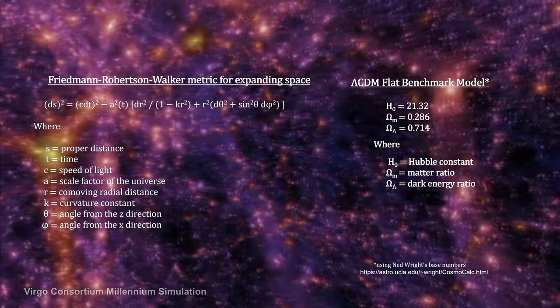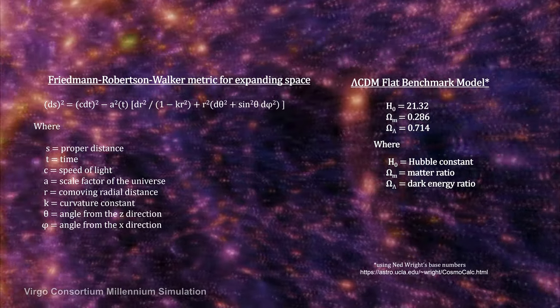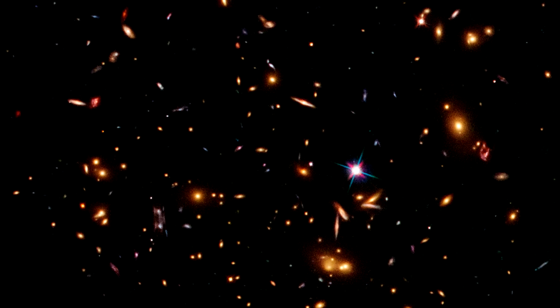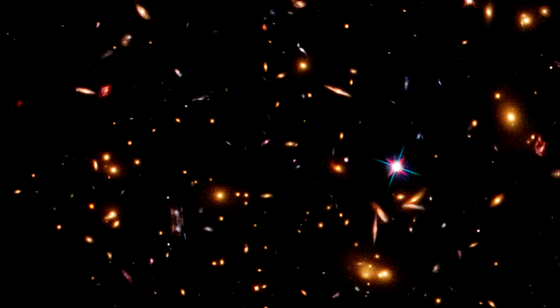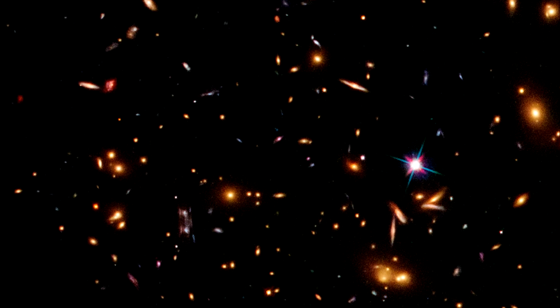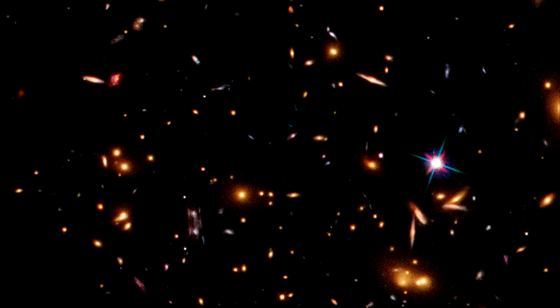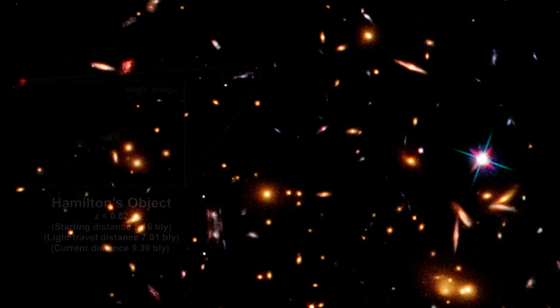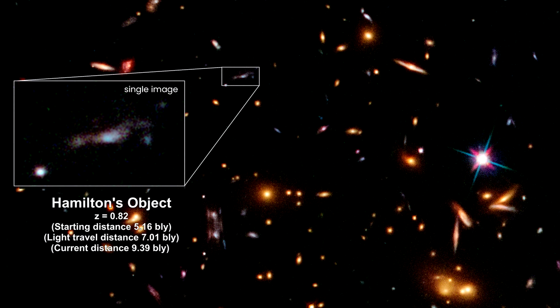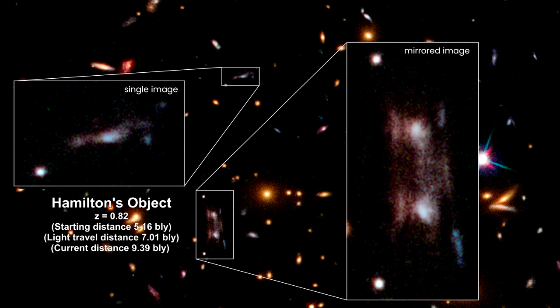Here are a few examples. Astronomer Timothy Hamilton, using the Hubble Space Telescope, discovered these unusual objects now named after him. The objects are the stretched images of a gravitationally lensed distant galaxy, located more than 7 billion light-years away. One appears to be a mirror image.